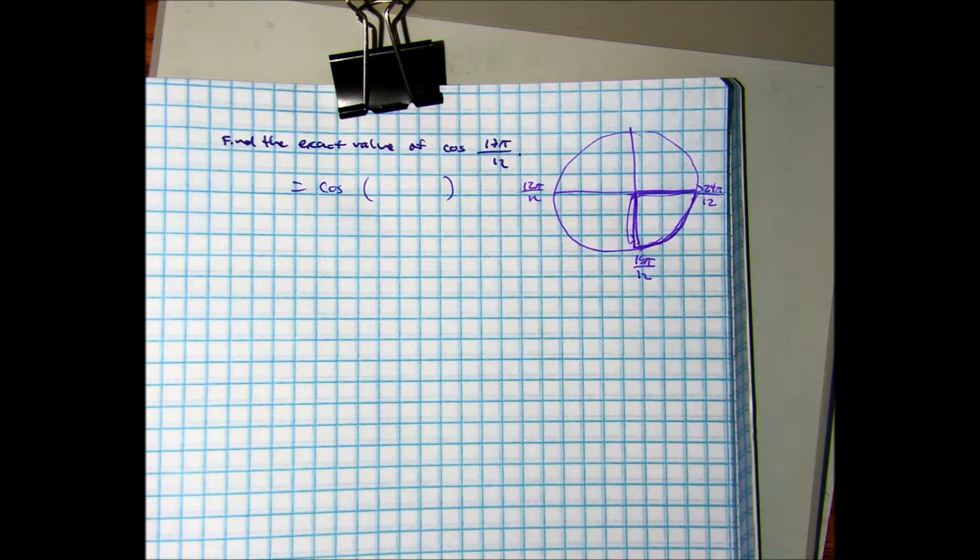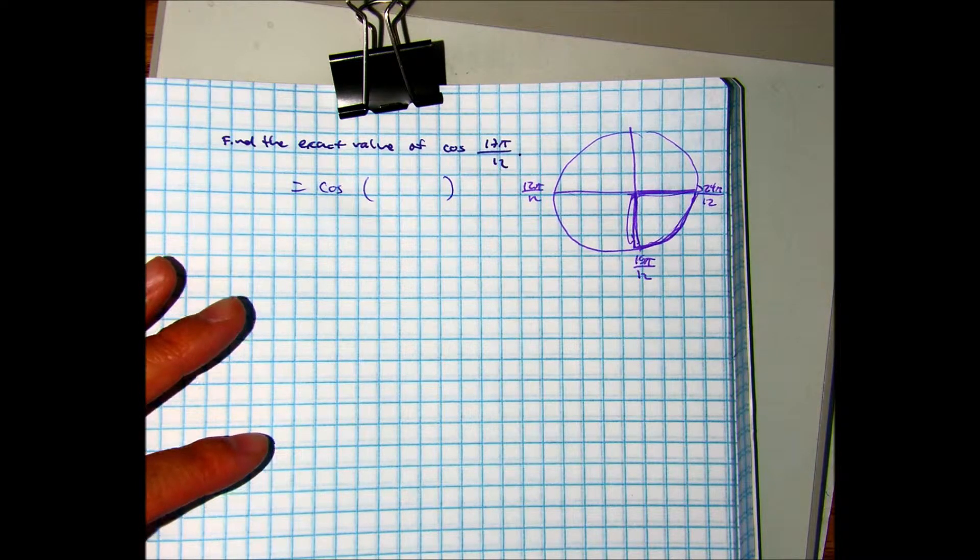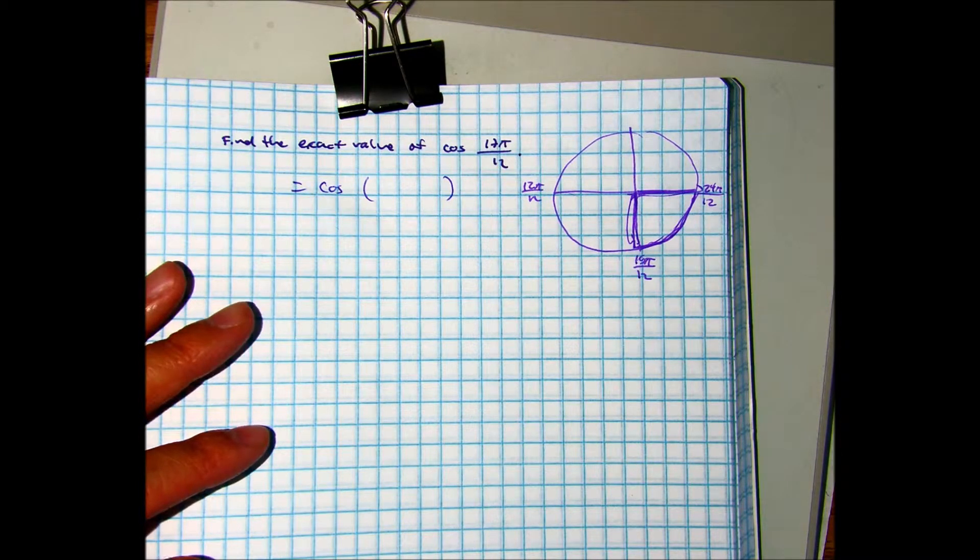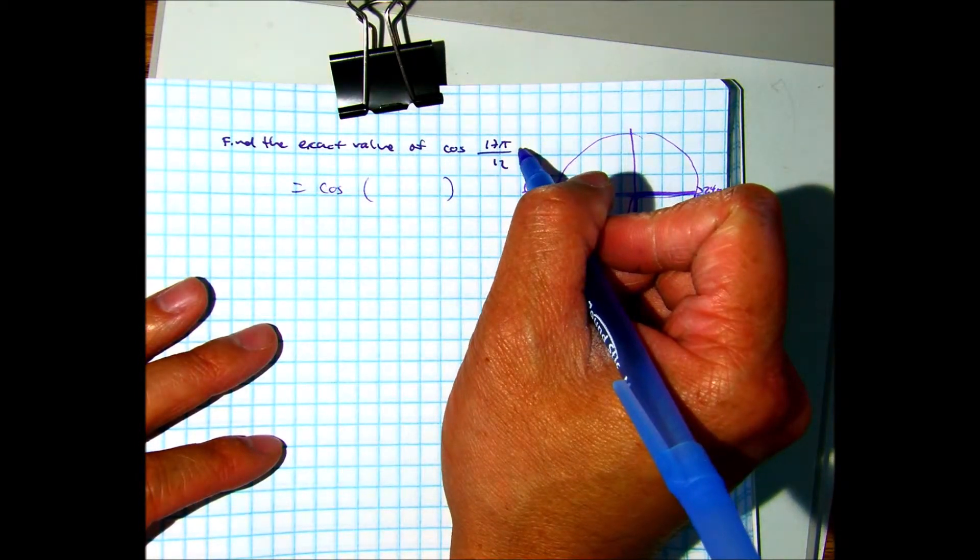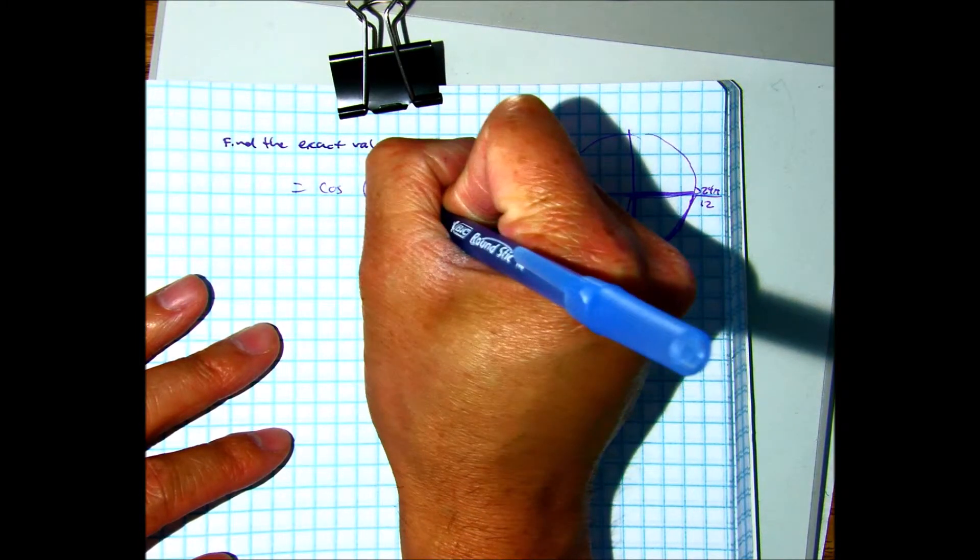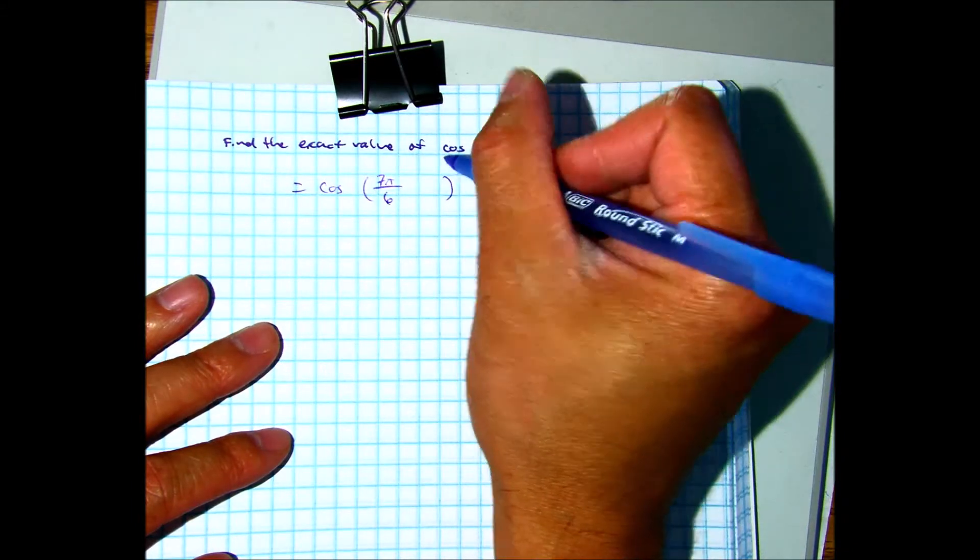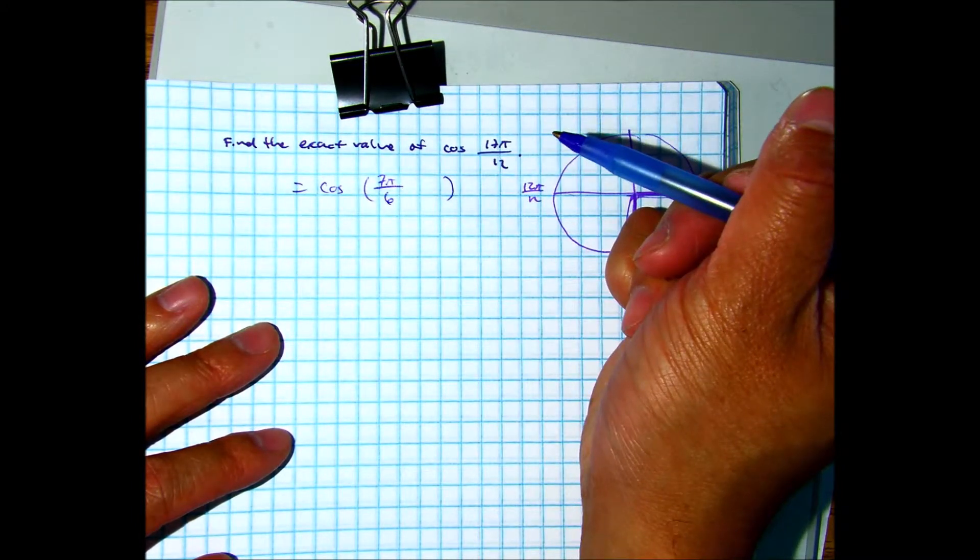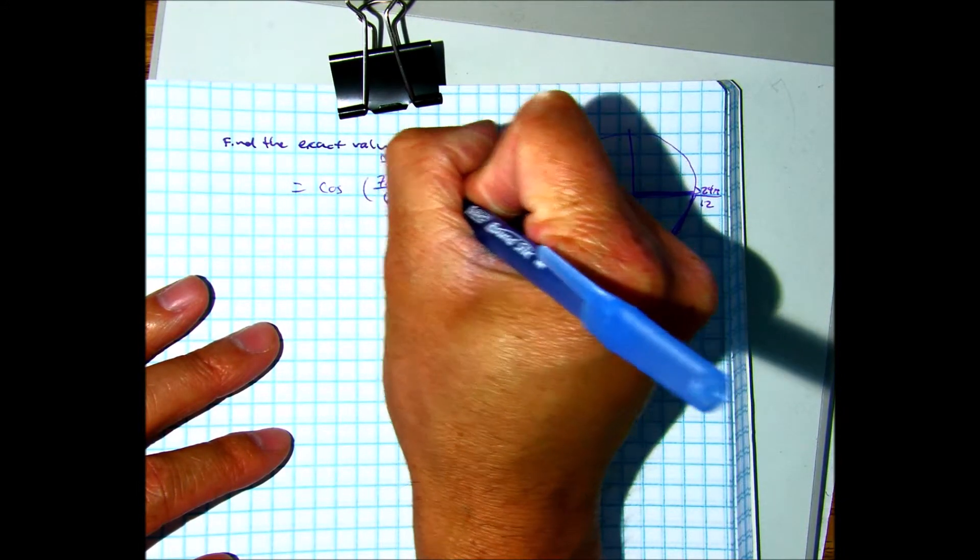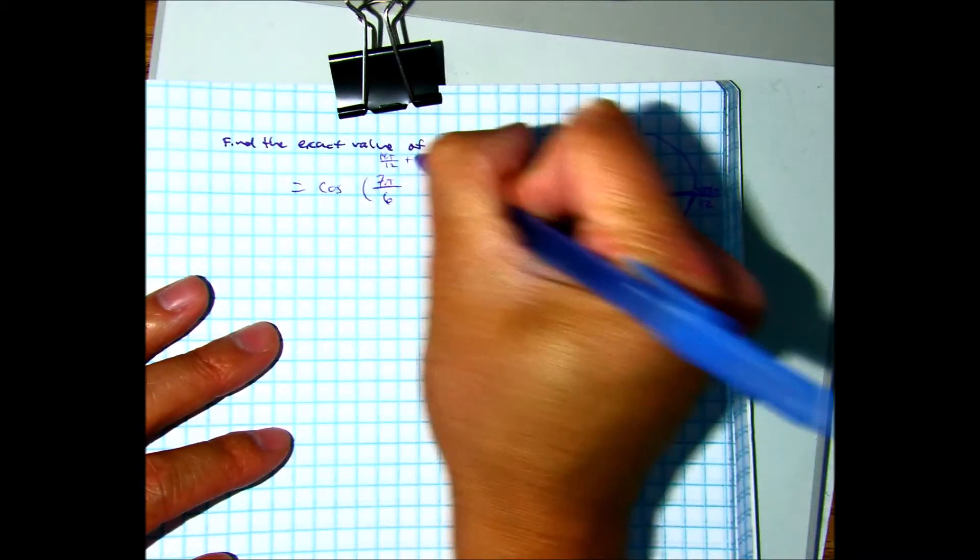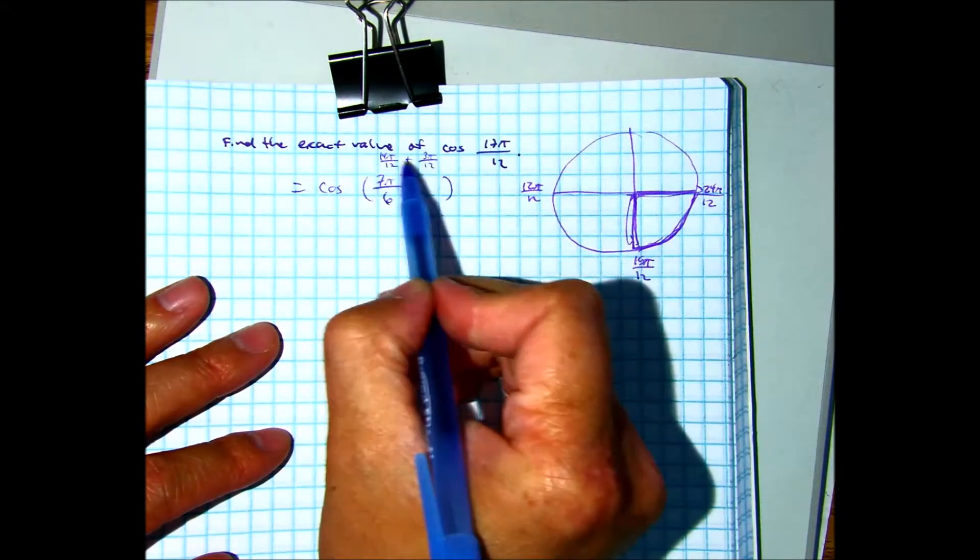Anybody got two numbers? Yeah. 7 pi over 6? 7 pi over 6. And? 11 pi? So, that would be 14 pi over 12. So, you just need how much more? 3 pi over 12. Does that make sense? 14 plus 3 gives you 17.